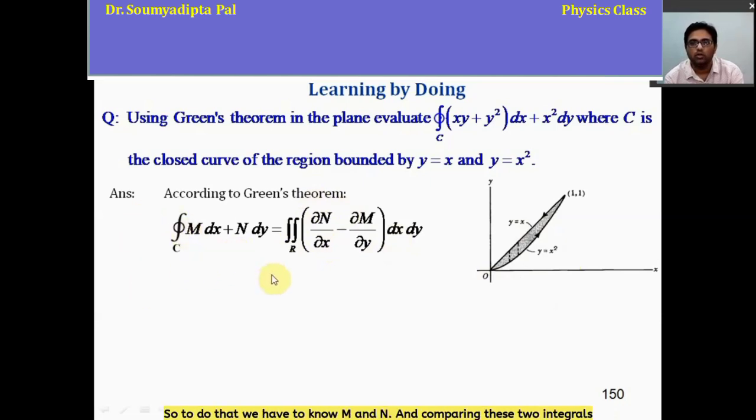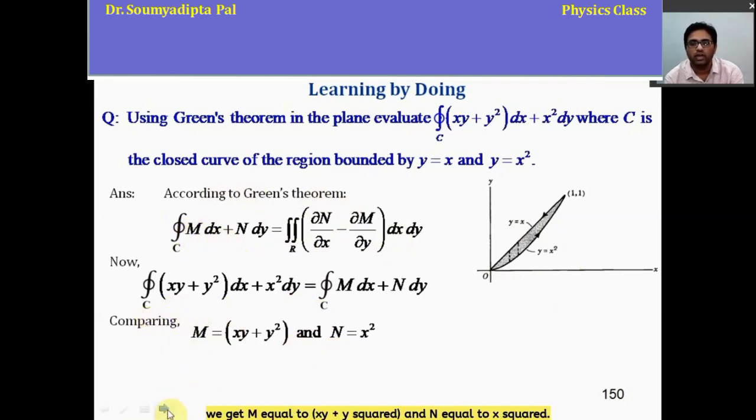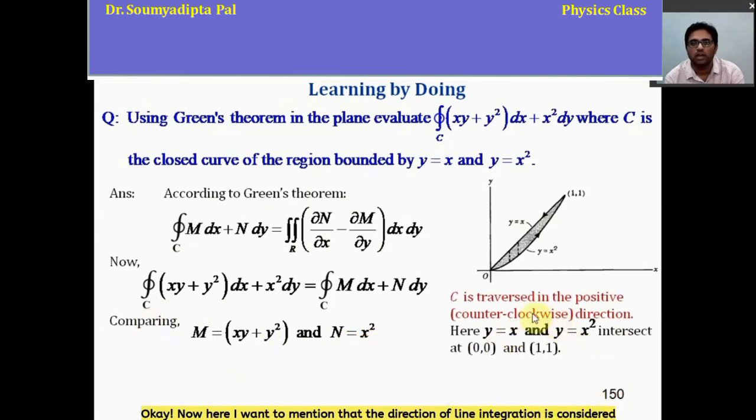So, to do that, we have to know m and n and comparing these two integrals, we get m equal to xy plus y square and n equal to x square. Now, here I want to mention that the direction of line integration is considered as positive or counterclockwise. And y equal to x and y equal to x square curves intersect each other at (0,0) and (1,1) point. And this will help us to evaluate the double integral.